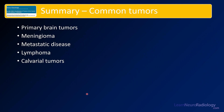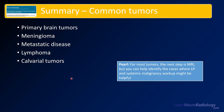In summary: when thinking about common tumors in the brain, consider whether they're in the parenchyma as primary brain tumors. When extra-axial, meningioma is the most common. With multiple lesions, think metastatic disease and lymphoma. When centered in the calvarium, think about that special differential. For most tumors, MRI is the next step, but you can help identify where an LP or systemic malignancy workup might be helpful — get those started sooner and sharpen your differentials.